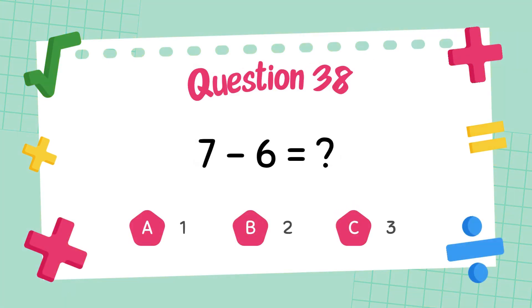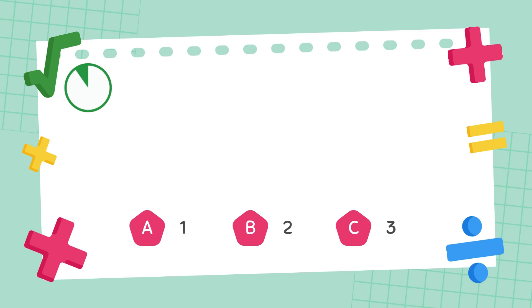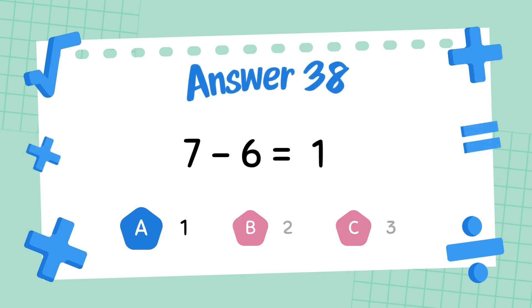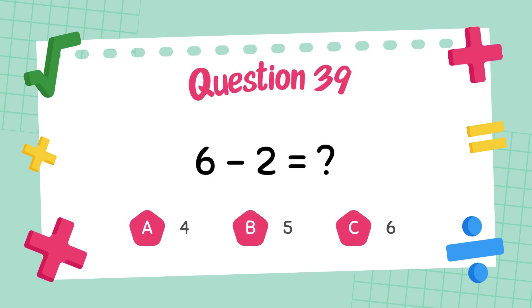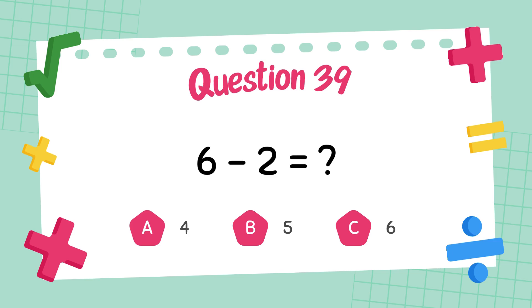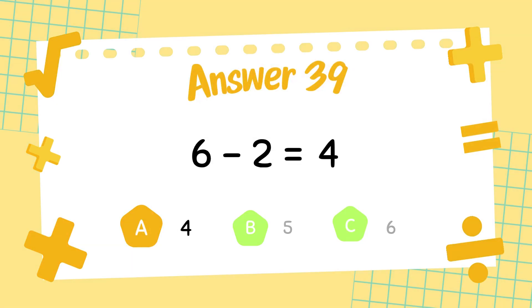What is 7 minus 6? The answer is 1. What is 6 minus 2? The answer is 4.